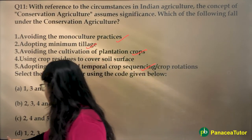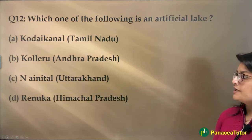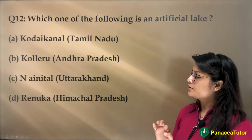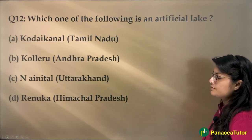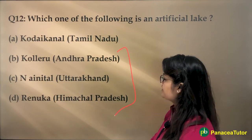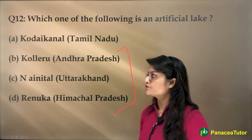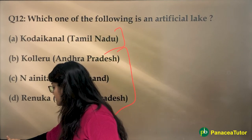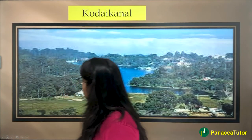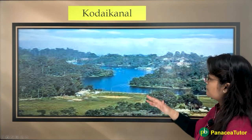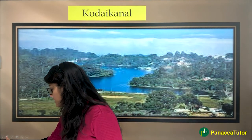The next question asks which one of the following is an artificial lake: Kolleru Lake in Andhra Pradesh, Kodai Canal in Tamil Nadu, Nainital in Uttarakhand, or Renuka in Himachal Pradesh. All others are natural existing ecosystems. Only Kodai Canal in Tamil Nadu, which is also a famous hill station, is an artificial lake.